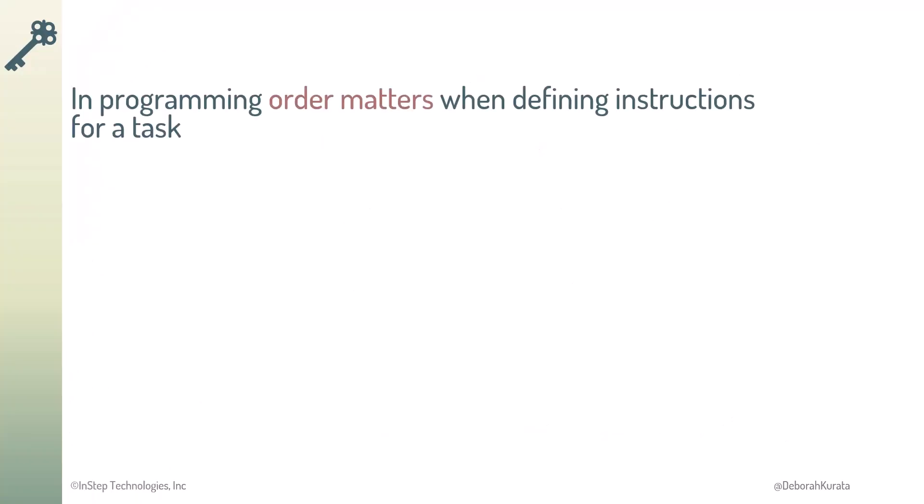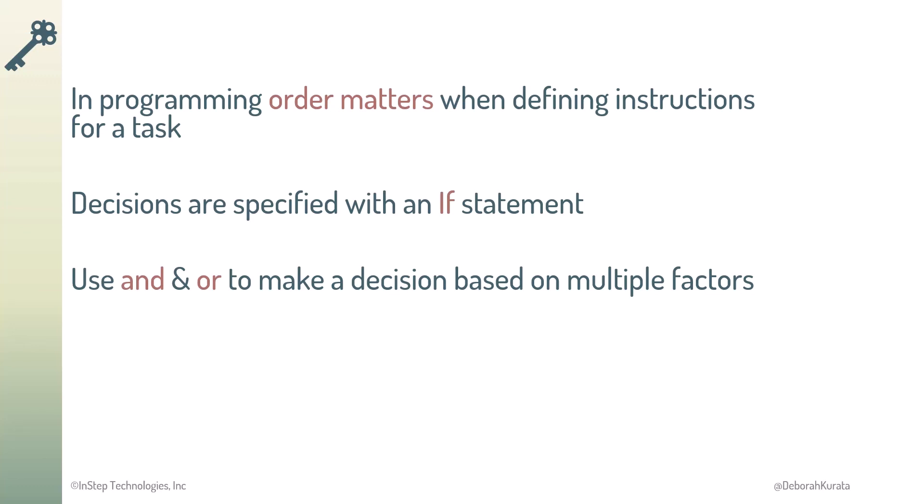So, in programming, order matters when defining the instructions for a task. Decisions in a program are specified with an if statement. Use and and or to make a decision based on multiple factors. Repeat instructions using a loop.